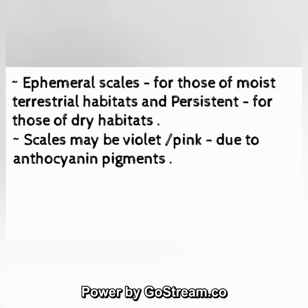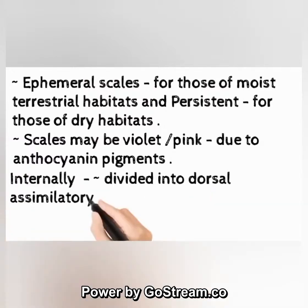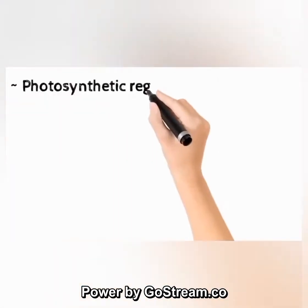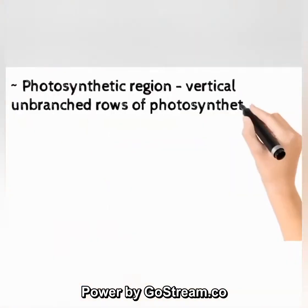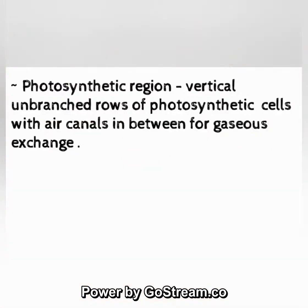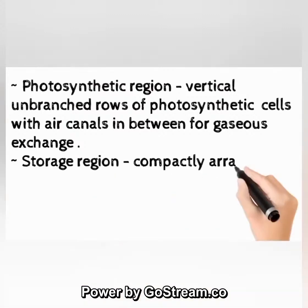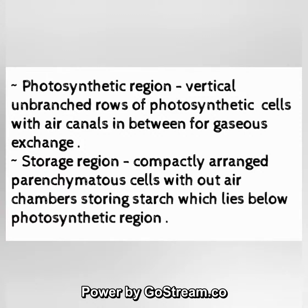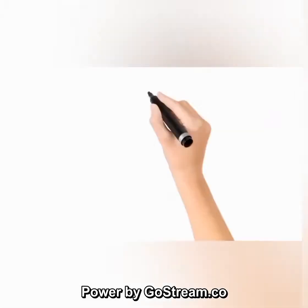Internally, the thallus is divided into a dorsal assimilatory (photosynthetic) region and a ventral storage region. The photosynthetic region consists of vertical unbranched rows of photosynthetic cells with air canals in between for gaseous exchange. The storage region has compactly arranged parenchymatous cells without air chambers, storing starch, lying below the photosynthetic region.